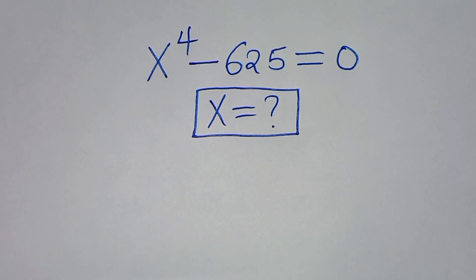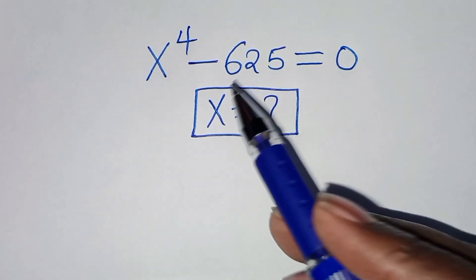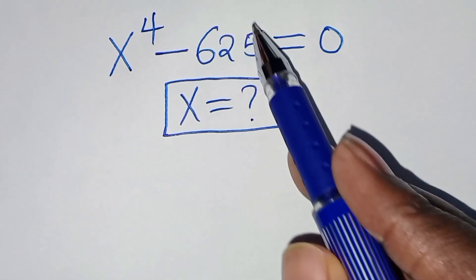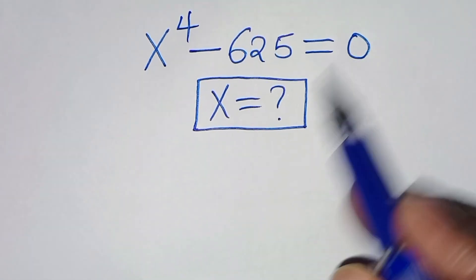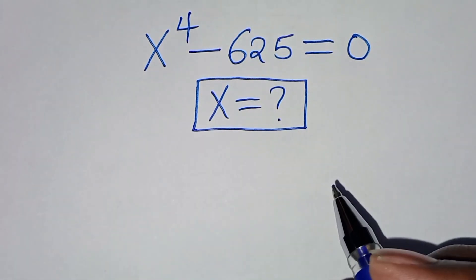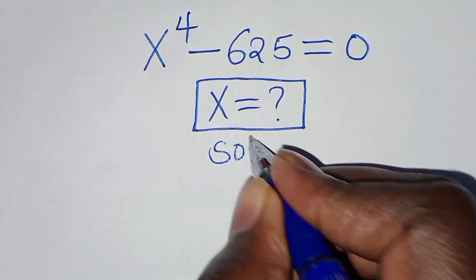However, you are welcome to solve this nice algebra problem, which is x to the power 4 minus 625, this is equal to 0. What is the value of x? Now, let's present the solution from here.